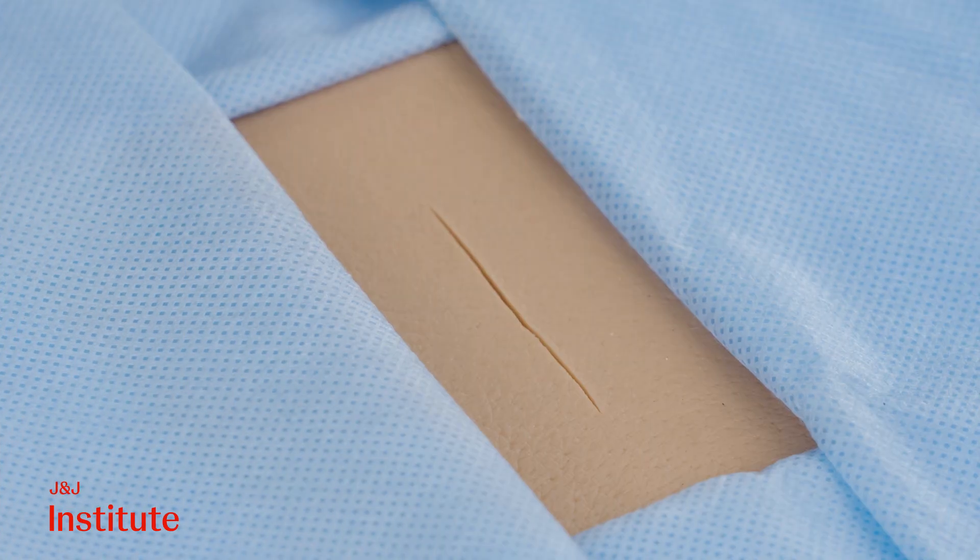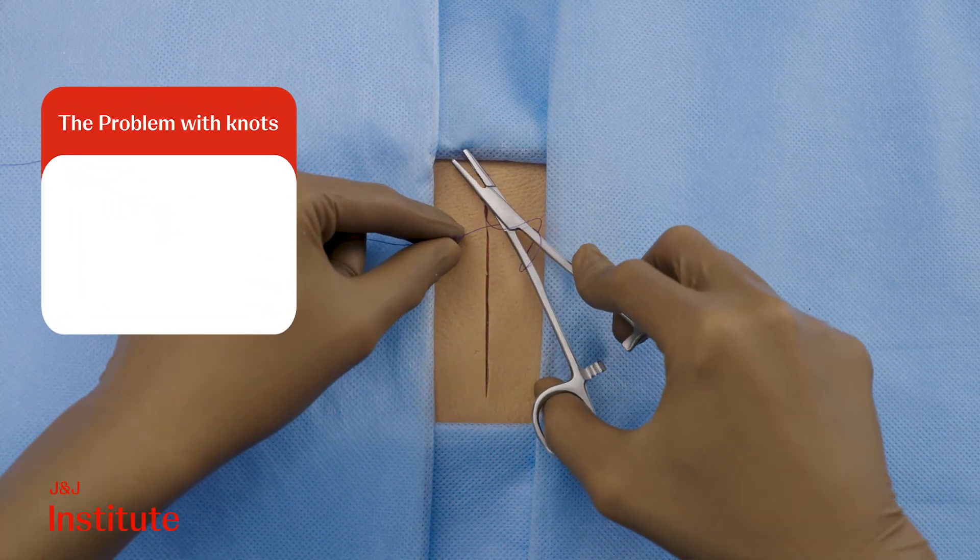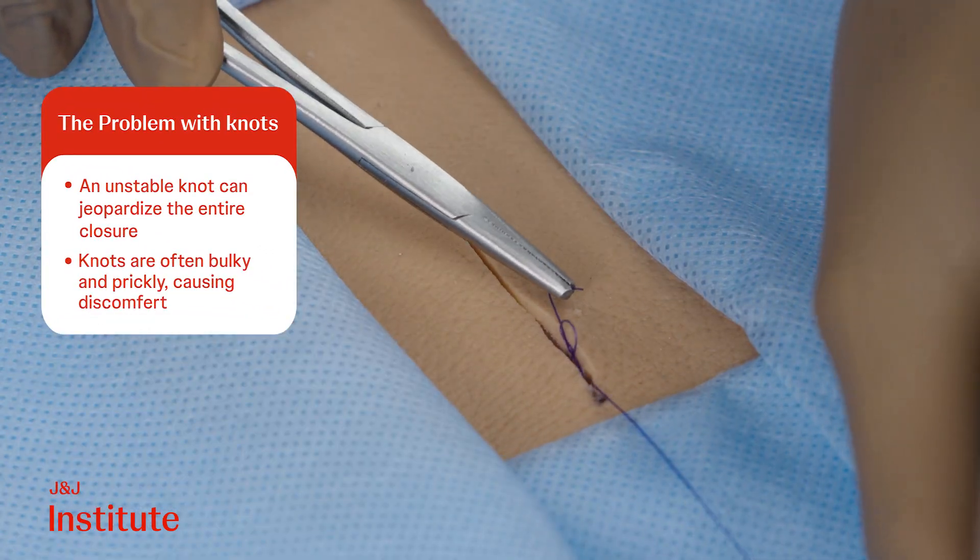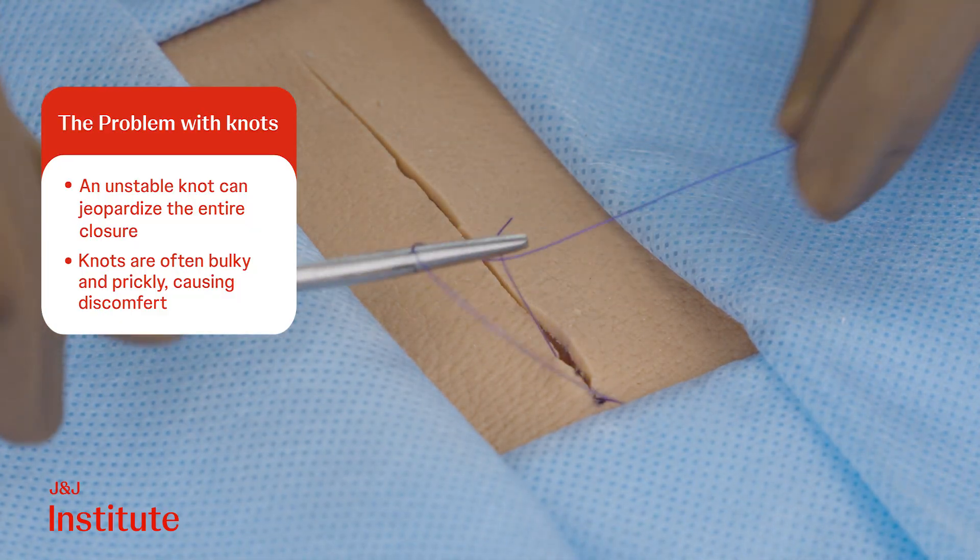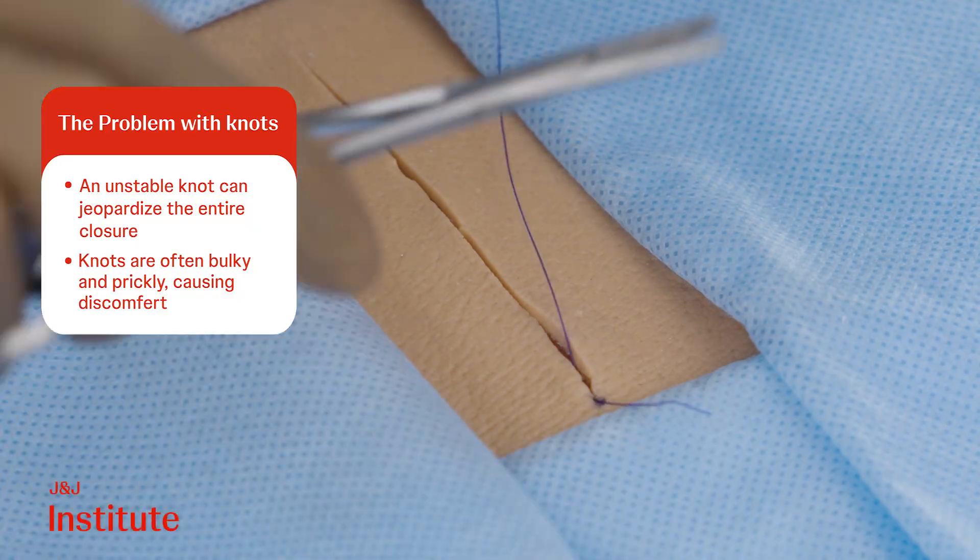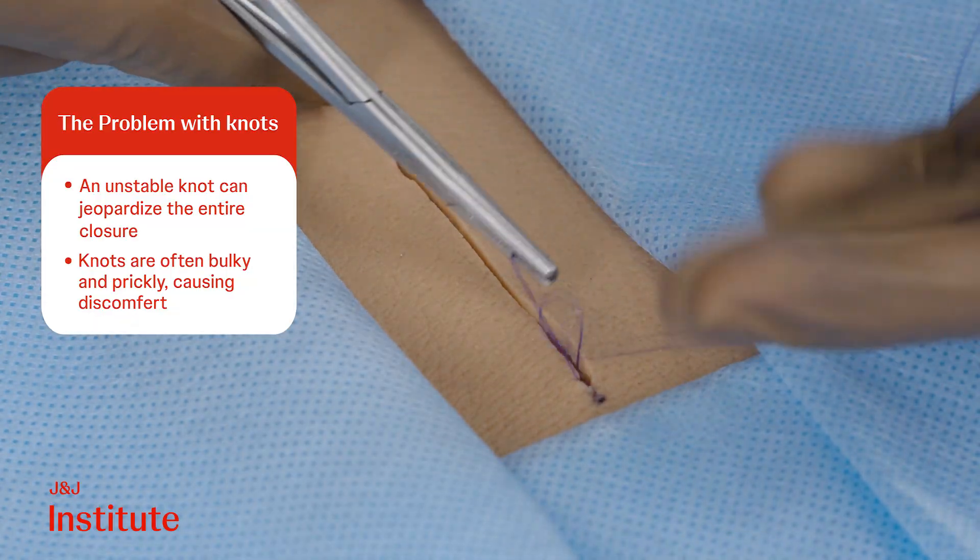While subcuticular closure yields impressive cosmetic outcomes, it presents its own set of challenges. One such challenge is its reliance on one or two knots for the entire closure. If these knots are improperly tight or if the sutures are trimmed too closely, there's a risk of unraveling.